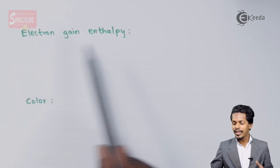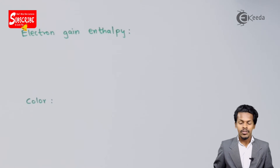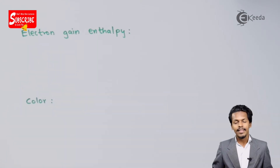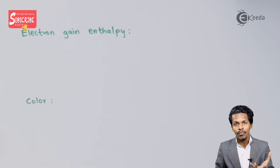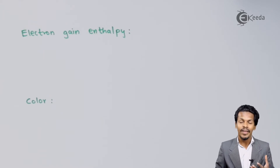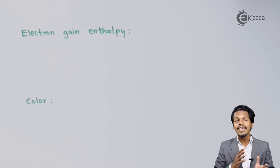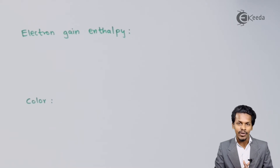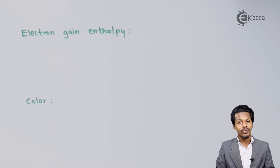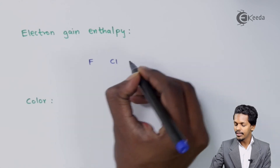The next point is electron gain enthalpy. Electron gain enthalpy is the energy released when one mole of electrons is accepted by one mole of atoms of an element. The trend here is different from ionization enthalpy and electronegativity.